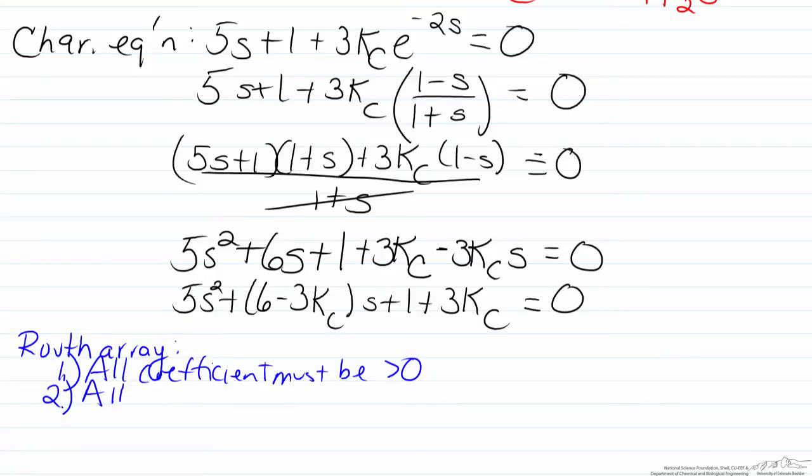so the two important parts of the Routh array is that all of the coefficients must be greater than 0, and the second part is that all the values in the first row of the array must also be greater than 0. So as we look at our equations here, we see the fact that the s squared term has 5, so that will always be positive. 6 minus 3Kc,